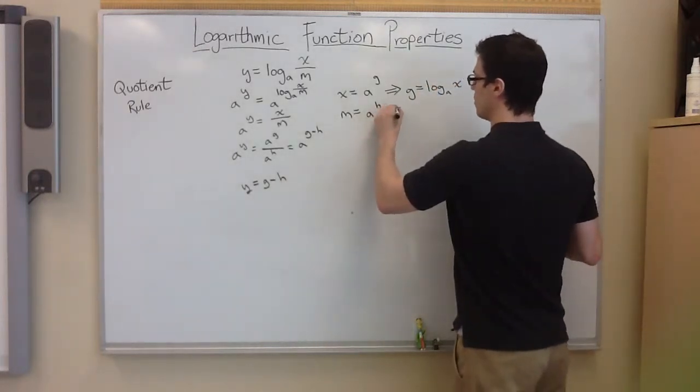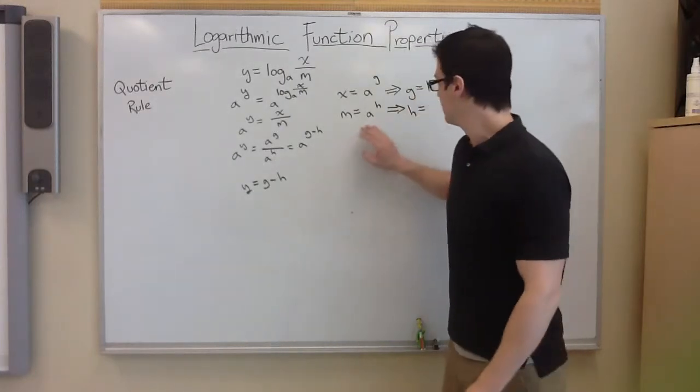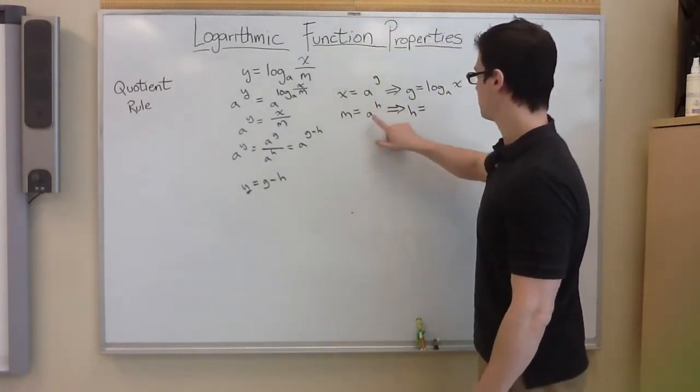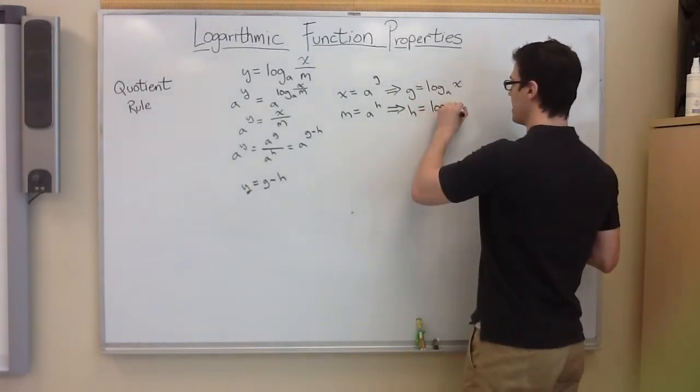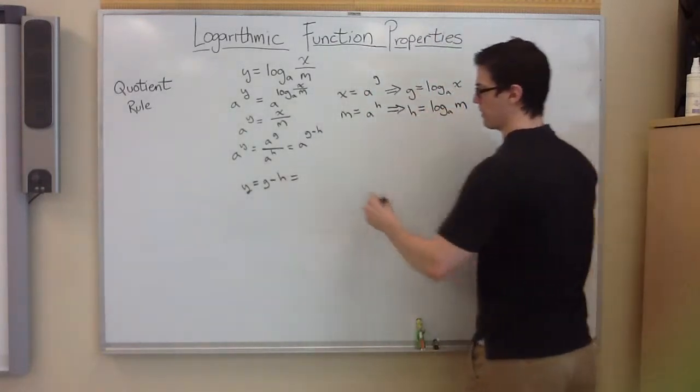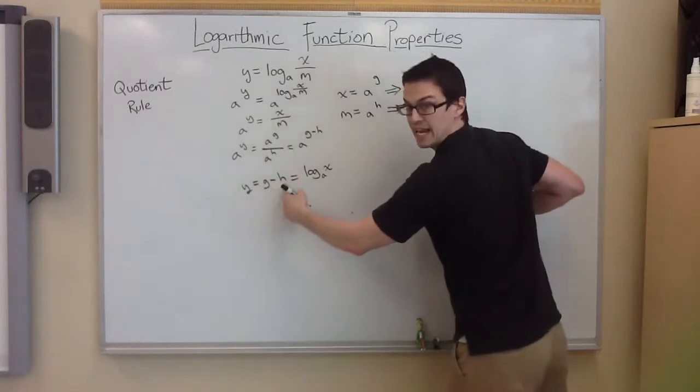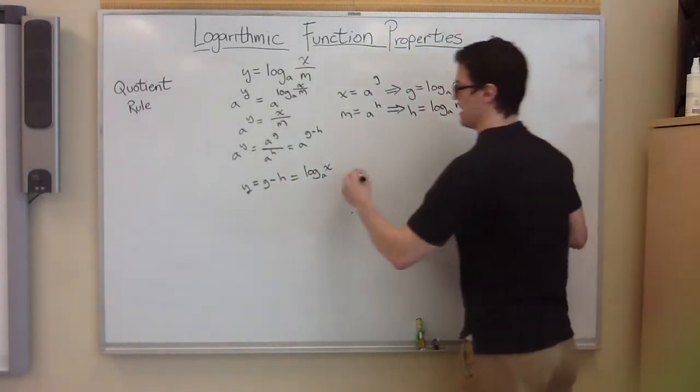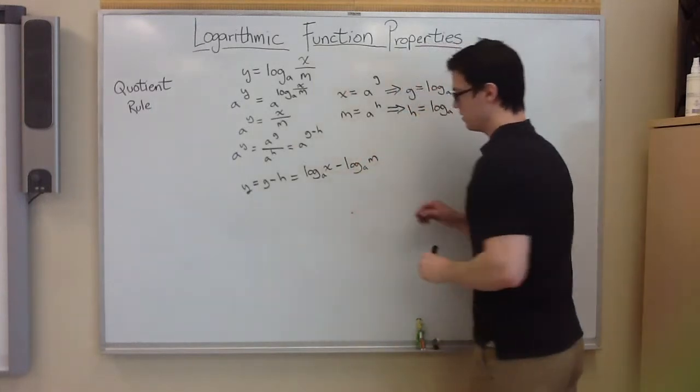And this one we want to solve for h, so you take the log base a of both sides, this will cancel out for the h and the log base a of this would be log base a of m. So I'm going to set this equal here. g is equal to log base a of x minus h. h is log base a of m, like so.